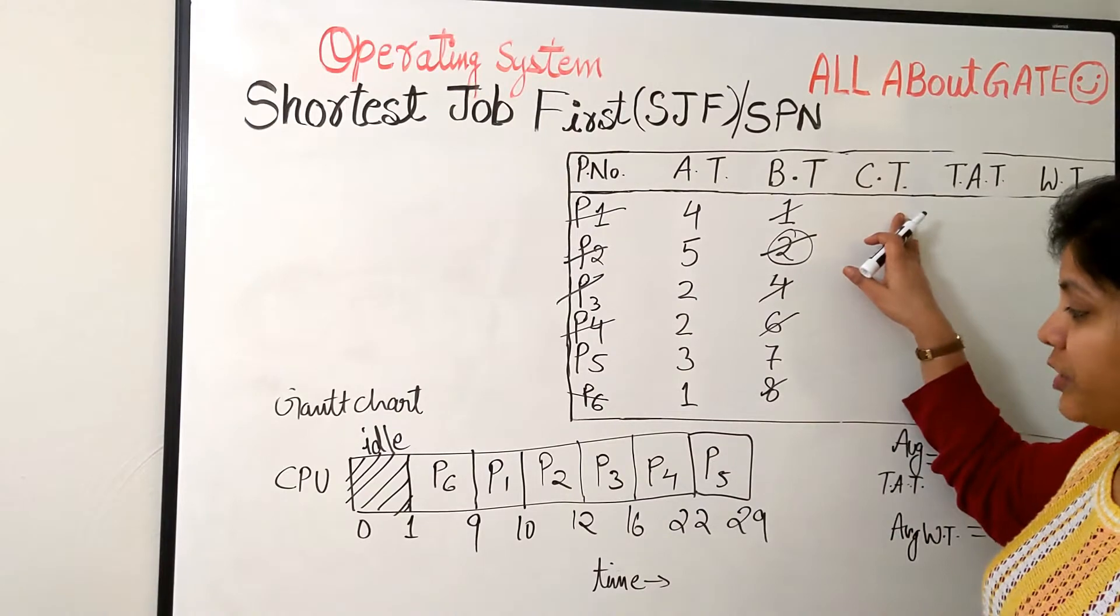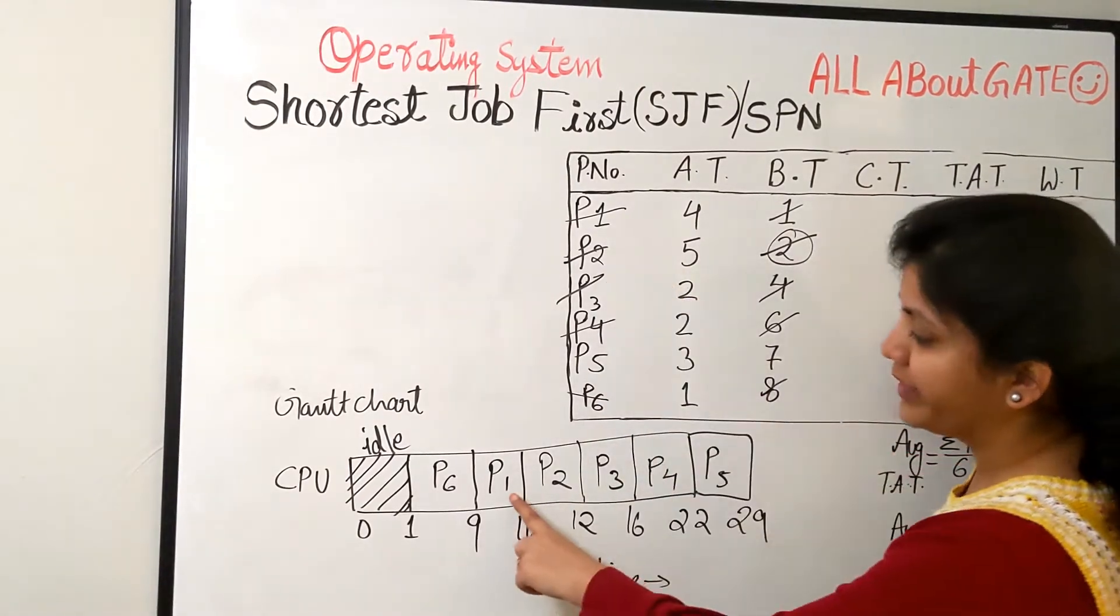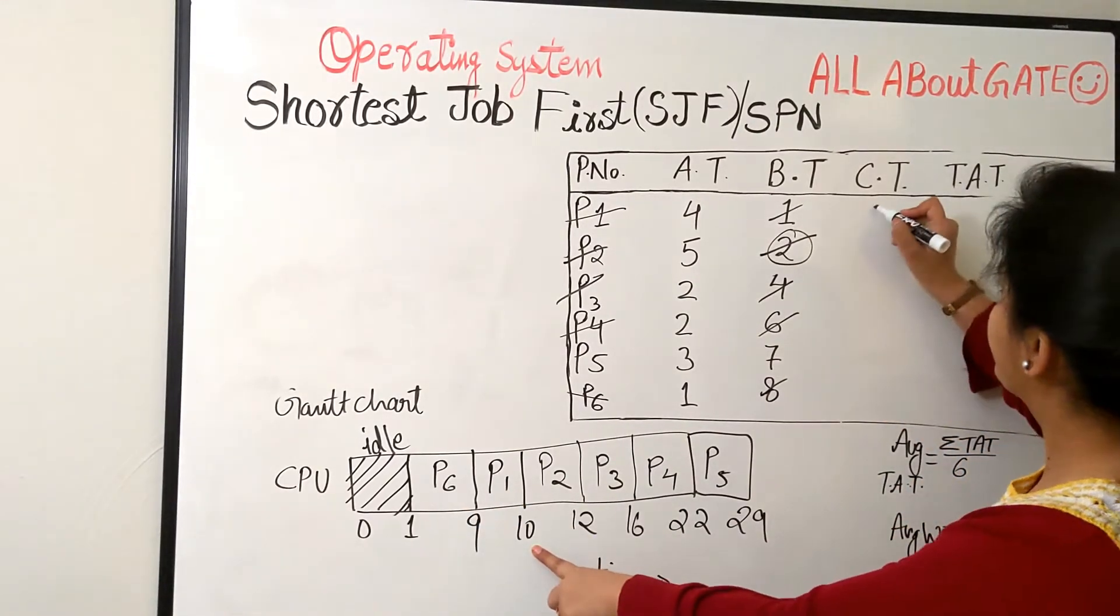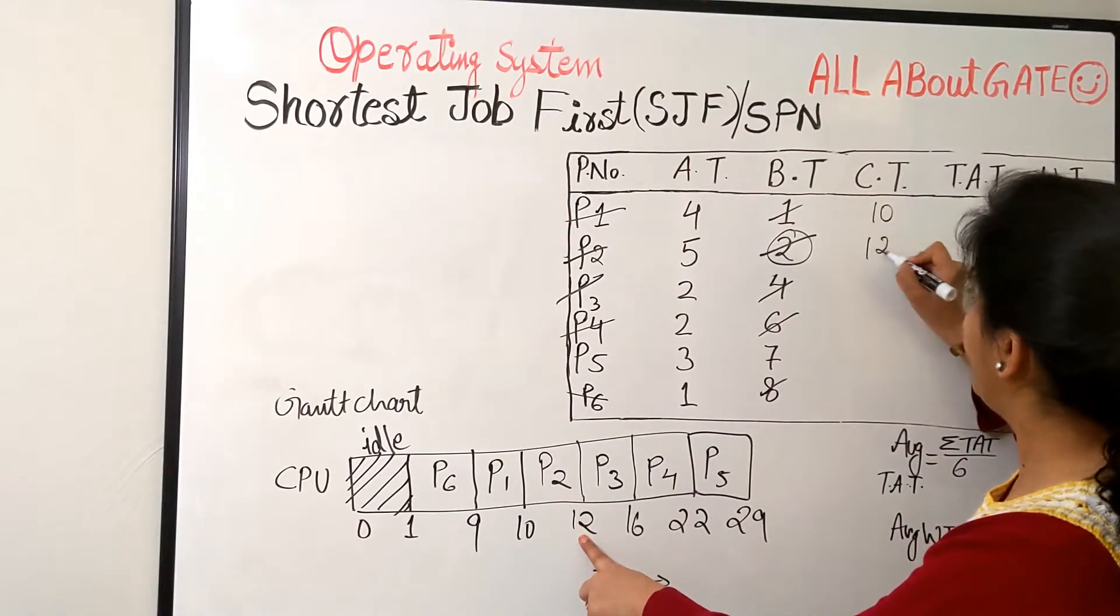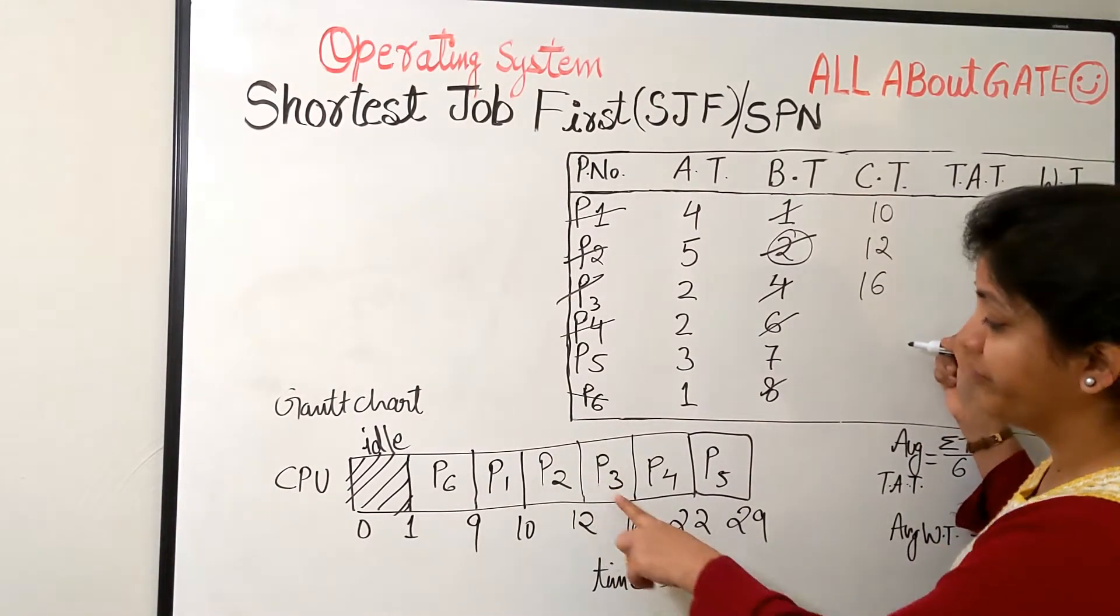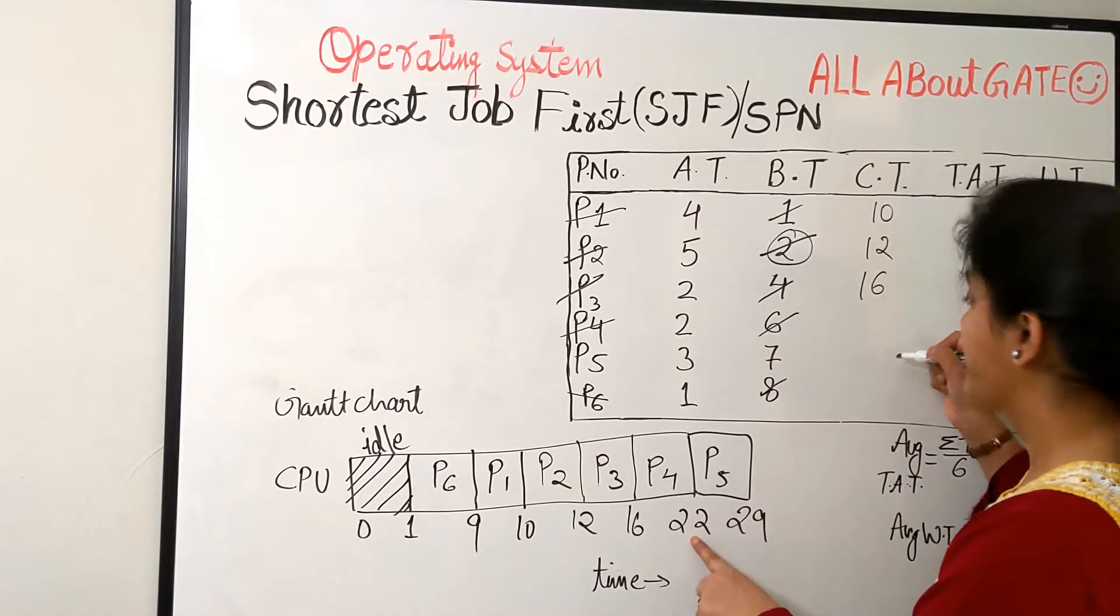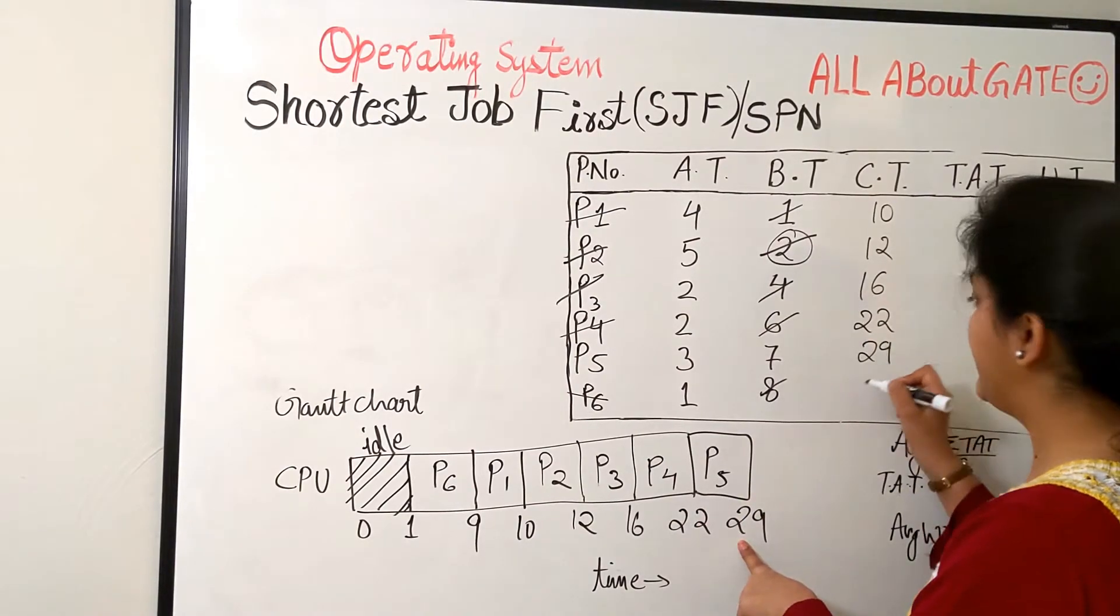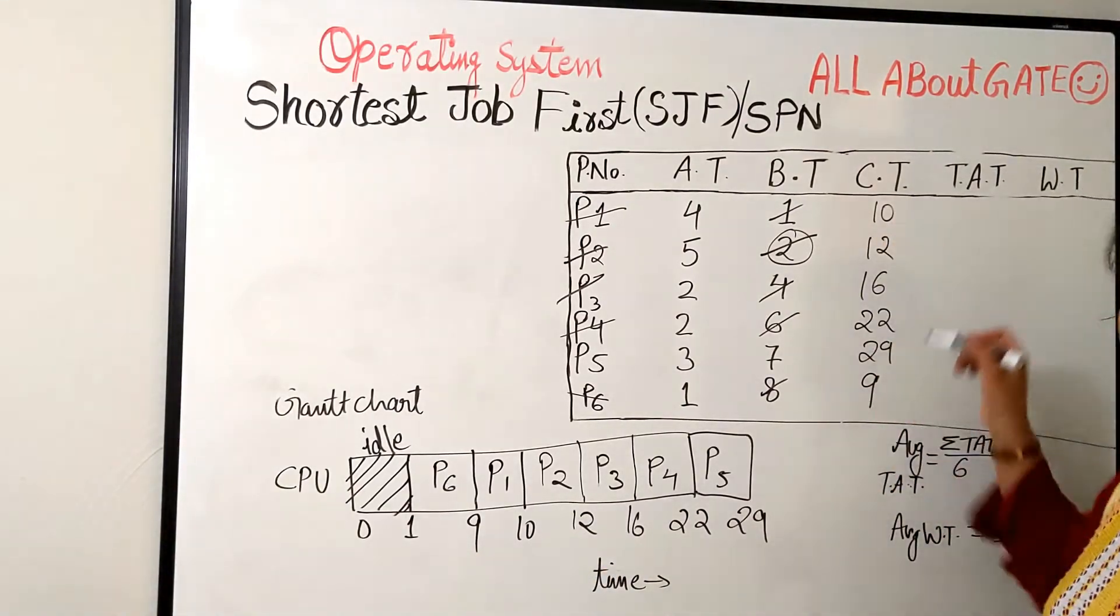So the completion time. Now you have to be again very careful. Second mistake to happen. Because you are looking at P1, so look at the P1. Don't come up here. Look at the P1. When does it complete? It completes at time 10. Simple. Now you want P2. So completes at time 12. P3 completes at time 16. Be careful. Put your finger so that you ensure that you are not doing any mistake. P4, time 22. So 22. Then P5, time 29. And the last is P6, which finishes at time 9. So this is how the completion time is there.